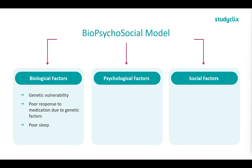Another biological factor is poor sleep. Our body doesn't function well if we're not sleeping enough, and our body also doesn't function well if you're abusing substances. This can include caffeine, as well as any illicit drugs like cocaine or ecstasy.